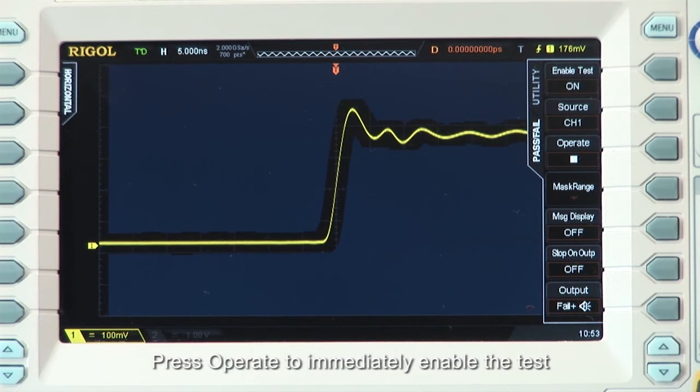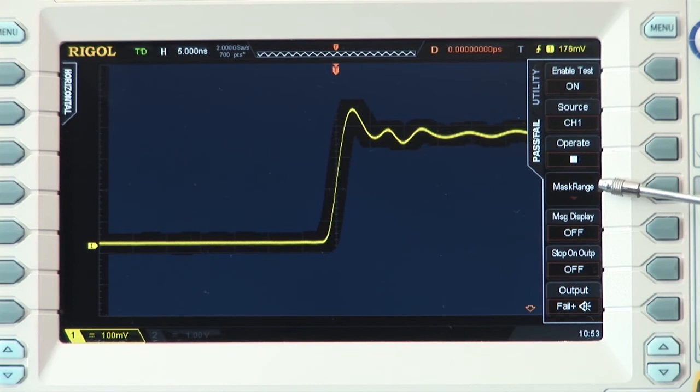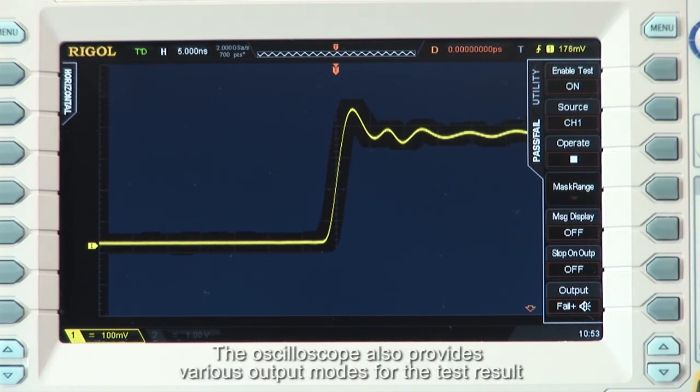Press Operate to immediately enable the test. Press Mask Range to set the fail region. The oscilloscope also provides various output modes for the test result.